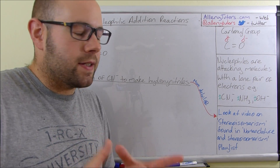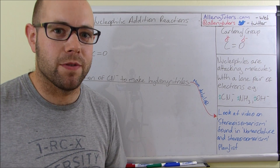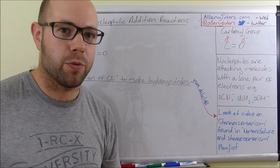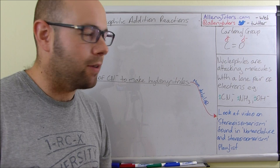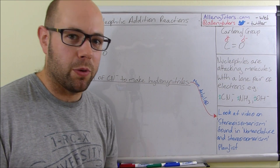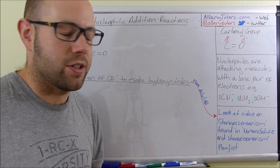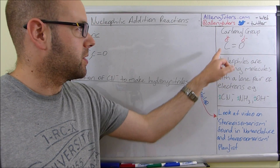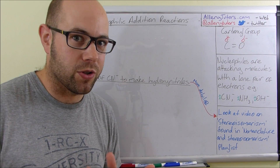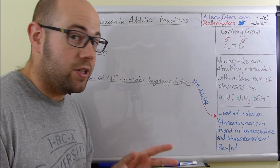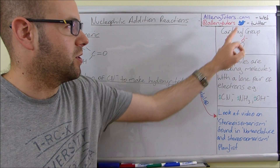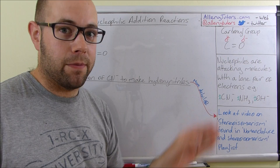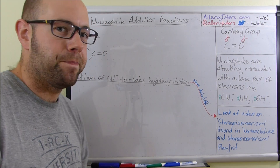This area of chemistry is mainly concerned with the carbonyl group. The carbonyl group is basically a carbon with a double bond and an oxygen attached to it. The key feature of the carbonyl group is it has a delta positive carbon and a delta negative oxygen. This is really important because all the reactions you're going to see here are geared around this feature.